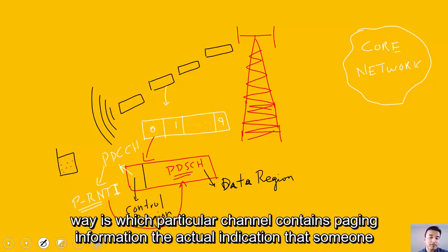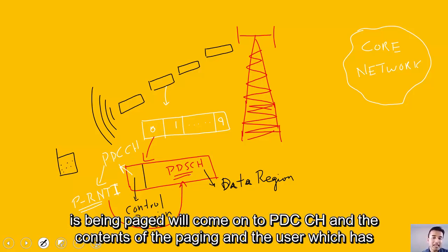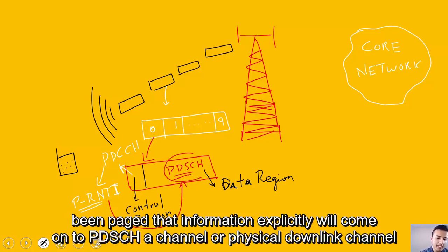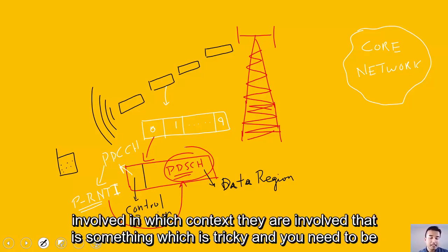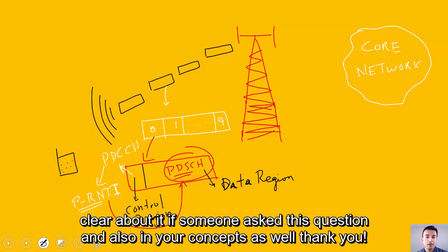To answer the question again in an elaborate way: which particular channel contains paging information? The actual indication that someone is being paged will come on to PDCCH, and the contents of the paging and the user which has been paged, that information explicitly will come on to PDSCH channel or physical downlink shared channel. That should give you a firm understanding that both the channels are involved in which context they are involved. That is something which is tricky, and you need to be clear about it. Thank you.